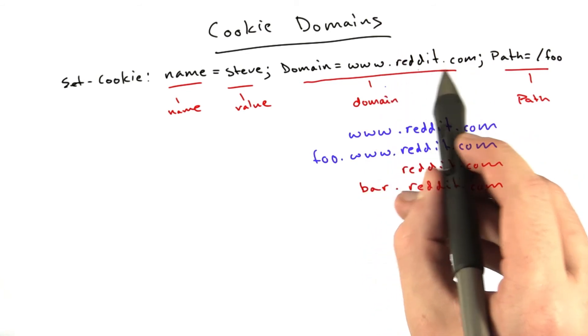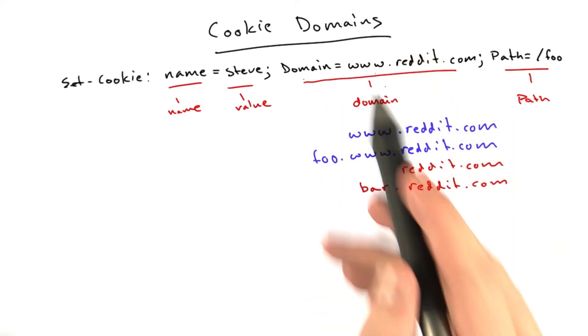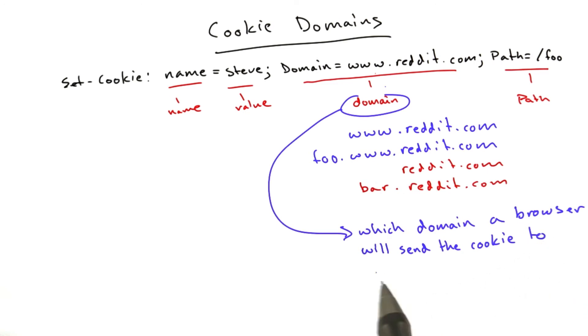If you try to set for just reddit.com, that first period will automatically get added. That controls, the domain controls which domain a browser will send a cookie to.